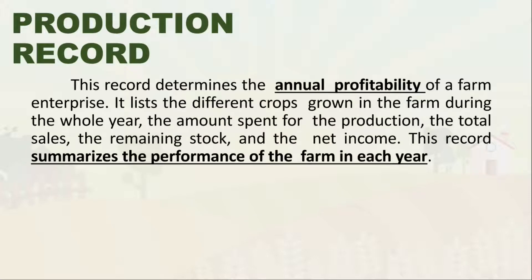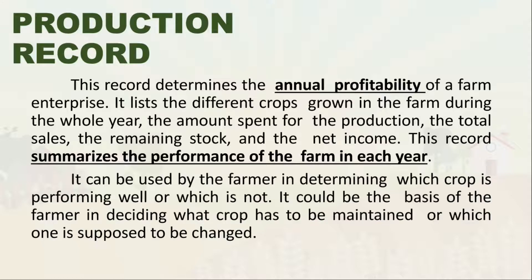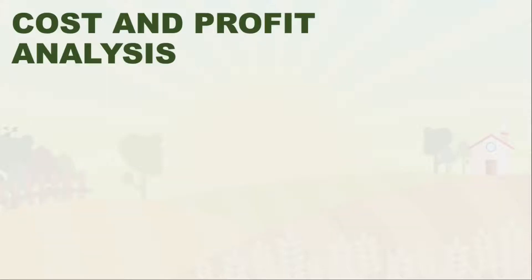Next is the production record. The production record determines the annual profitability — it summarizes the performance of the farm each year. It can be used by the farmer to determine which crop is performing well or not, and can be the basis for deciding which crop should be maintained or which one should be changed. Dito natin makikita kung ano yung dapat nating ipagpatuloy na mga pananim at ano naman yung mga pananim na hindi na pumipikita at pwede nating palitan.